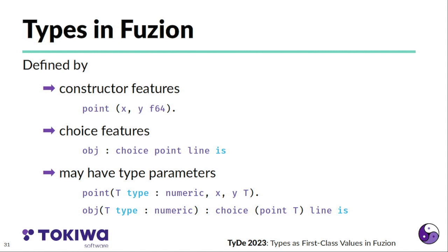Features that define types in Fuzion are either constructor features that define product types or choice features that define sum types. And all these types may also have type parameters. So we could have a version of point that is not fixed to floating point values, but that has an arbitrary numeric type for the coordinates, or also our object could have a numeric type parameter and then pass it on to the different variants of that choice.